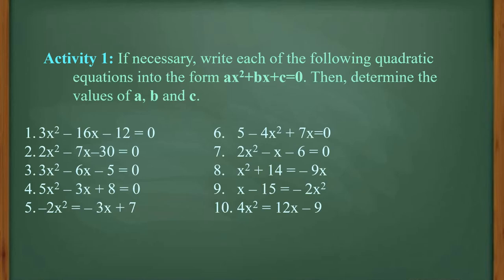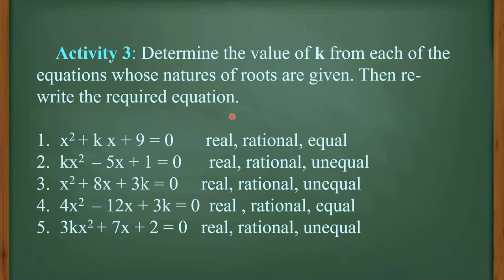Now for the activity: if we still have time, we will do this on our Google Meet. For Activity 2, determine the value of the discriminant b squared minus 4ac of each of the following quadratic equations. Write the equations in standard form ax squared plus bx plus c equals 0 if necessary, then determine the values of a, b, and c. For Activity 3, determine the value of k from each of the equations whose nature of roots are given, then rewrite the required equation.